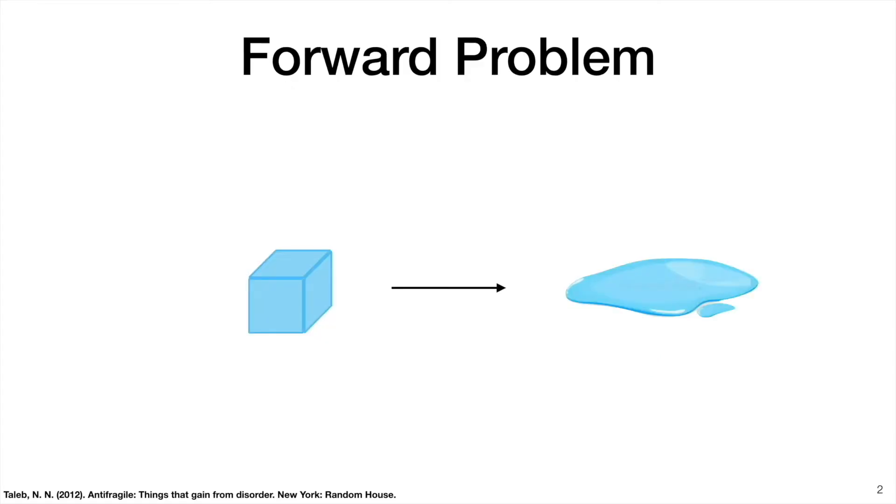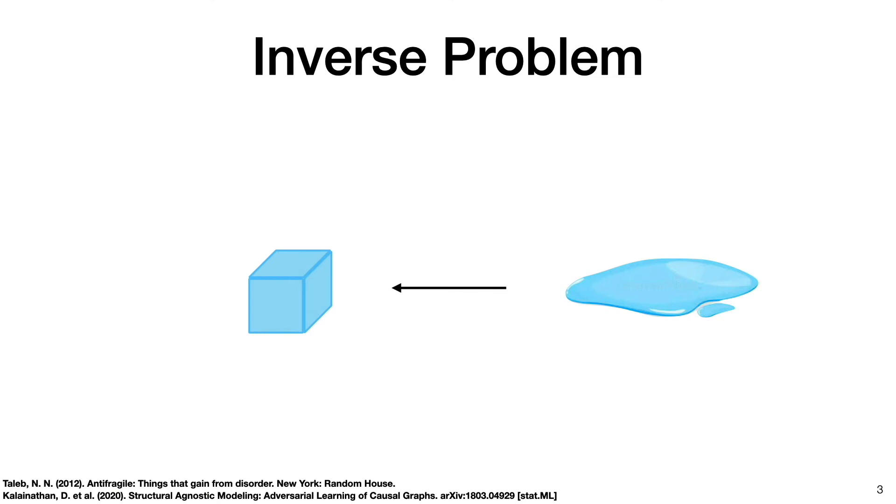So causal discovery is an example of a so-called inverse problem. And inverse problems can be understood in contrast to forward problems. For example, imagine you have an ice cube sitting on your kitchen counter. You know the shape of the ice cube, you know the volume. And if you were to let that ice cube sit there for a few hours, you could probably predict with some reasonable degree of accuracy what the resulting puddle of water would look like. The inverse problem is like the opposite of this. In other words, the inverse problem would be given a puddle of water on the kitchen counter, predicting the shape of the ice cube that made that puddle.